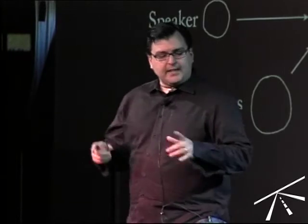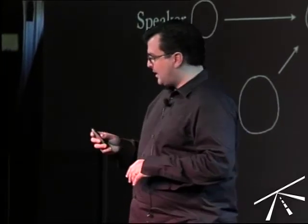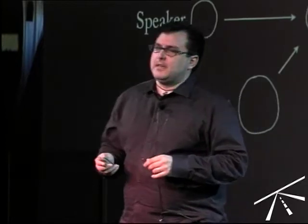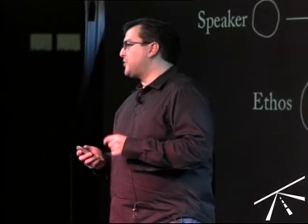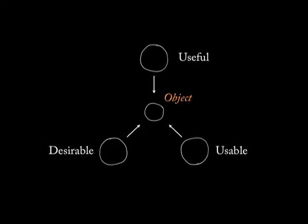Buchanan took these notions of the rhetorical stance and also noticed the triad of object design from a woman named Elizabeth Sanders. She came up with the notion of the triad for objects — that objects have three qualities: the usefulness, the usability, and the desirability.